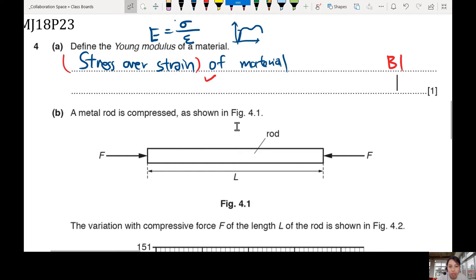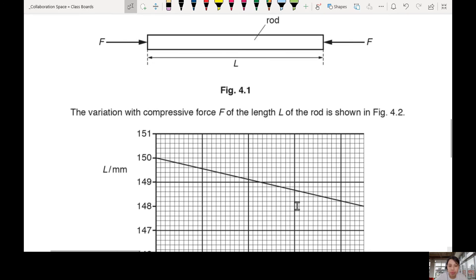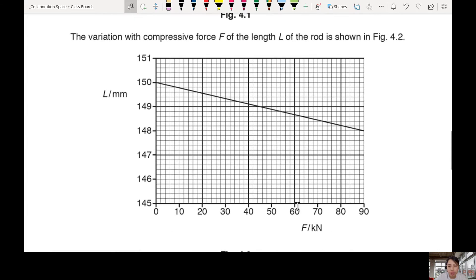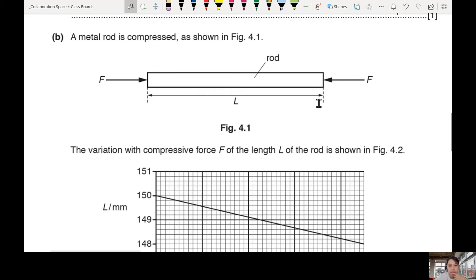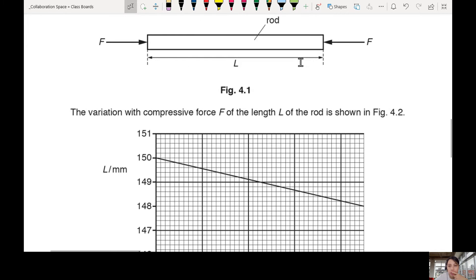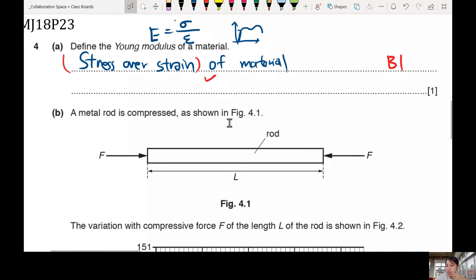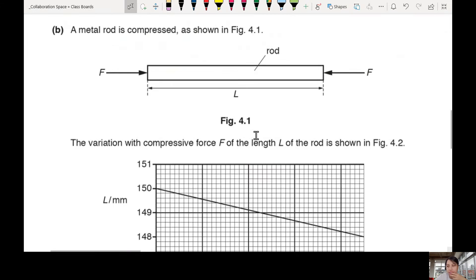So we have a metal rod that is compressed, just like any pillar in your house. The variation with force over length is shown. This is a weird graph - why they put length against force? Isn't it usually force against length? They purposely put it like that to confuse us. So this is the length of the rod itself. The idea is stress over strain.